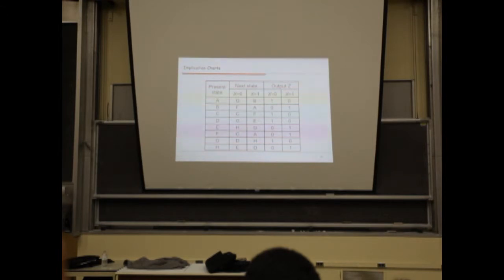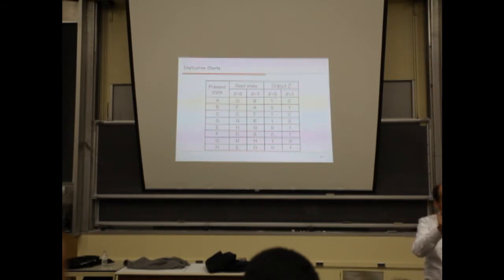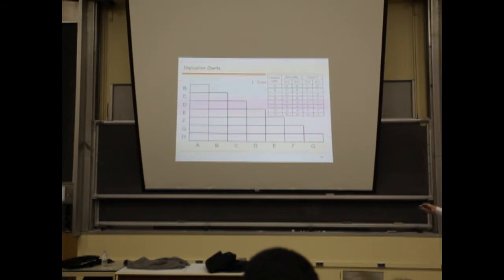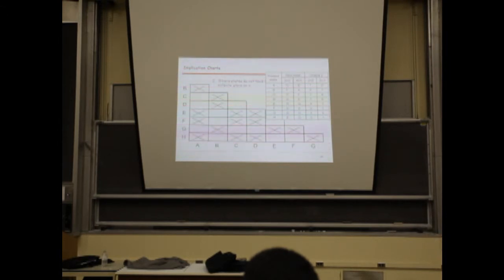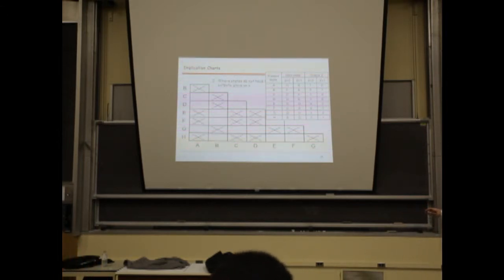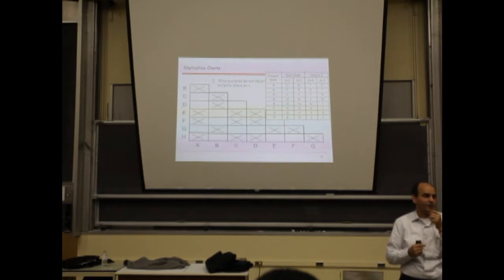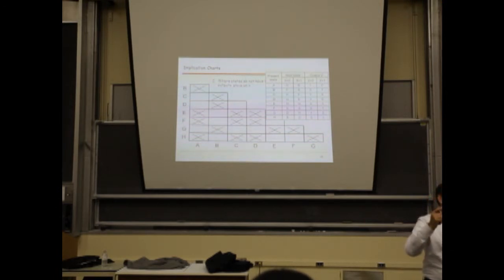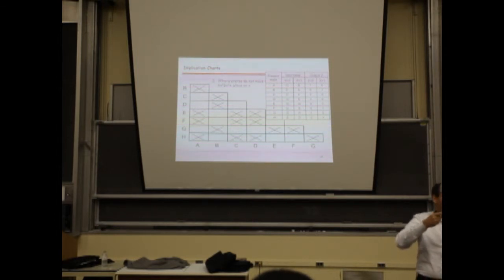The best way to deal with state reduction is to use implication charts, instead of doing trial-and-error pairwise comparison. With an implication chart, you start from the table and copy this information. The first thing you do is determine the states that there is no way they can be compatible. Rather than asking what two states are compatible, you determine the states that are not compatible and get rid of them.